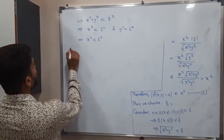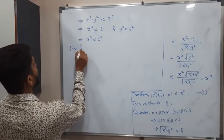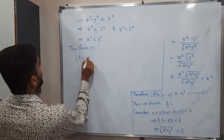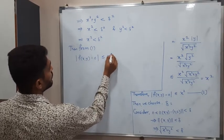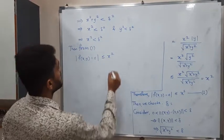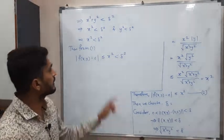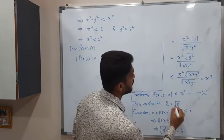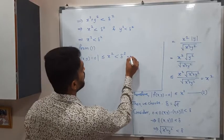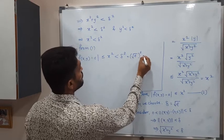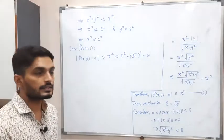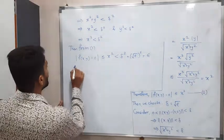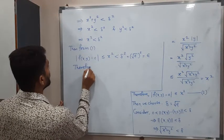From equation one, |f(x,y) - 0| is already proved to be less than or equal to x², and here we have x² less than delta². Since we need this to be less than epsilon, our choice of delta should be the square root of epsilon. If we put delta equal to root epsilon, then delta² equals epsilon, and we succeed in proving that |f(x,y) - 0| is less than epsilon.